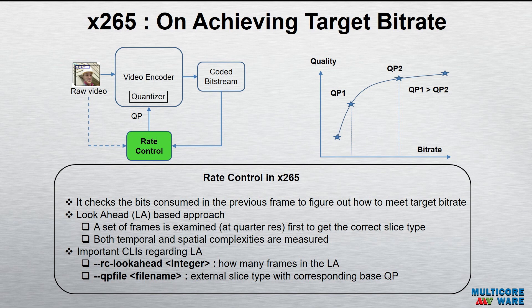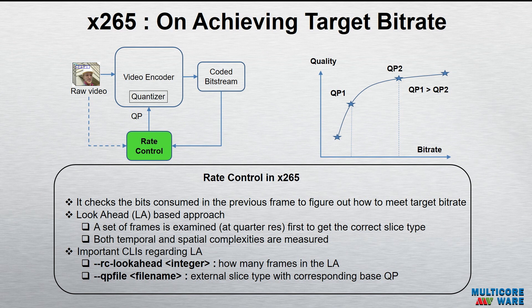The look-ahead approach means that while you're encoding frame N, you should know what will come in N plus P frames ahead. While encoding a frame, you should know about future frames. This is important because if you know the future frames are complex, you may reduce bits in the current frame. If you know the future frames are similar or simple enough, you may use more bits there. In the look-ahead analysis, we do a quarter-resolution-based analysis — half the height and half the width, so quarter size. We analyze it in both temporal and spatial domains, calculating different complexities and determining what kind of bit allocation is appropriate.